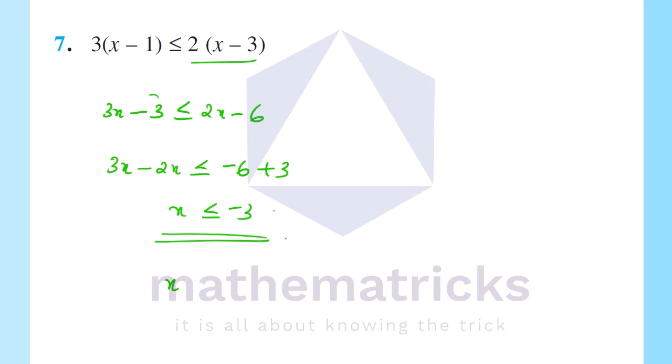The solution is x equals open interval minus infinity to closed interval minus 3. That is x less than or equal to minus 3, written as the interval (-∞, -3].